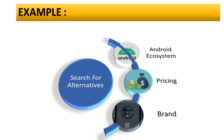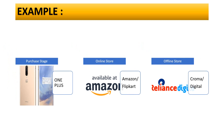Now comes the third stage — evaluation of alternatives. We have a plethora of options in the Android mobile market, with brands like Samsung, OnePlus, Oppo, Vivo, Realme, and many others. In the evaluation stage, the consumer considers all factors like price, quality, and value-added features of all the brands. After evaluating all the alternatives, they move to the purchase decision stage, where the consumer decides to buy a OnePlus mobile — either through an online store like Amazon or an offline store like Croma or Reliance Digital.